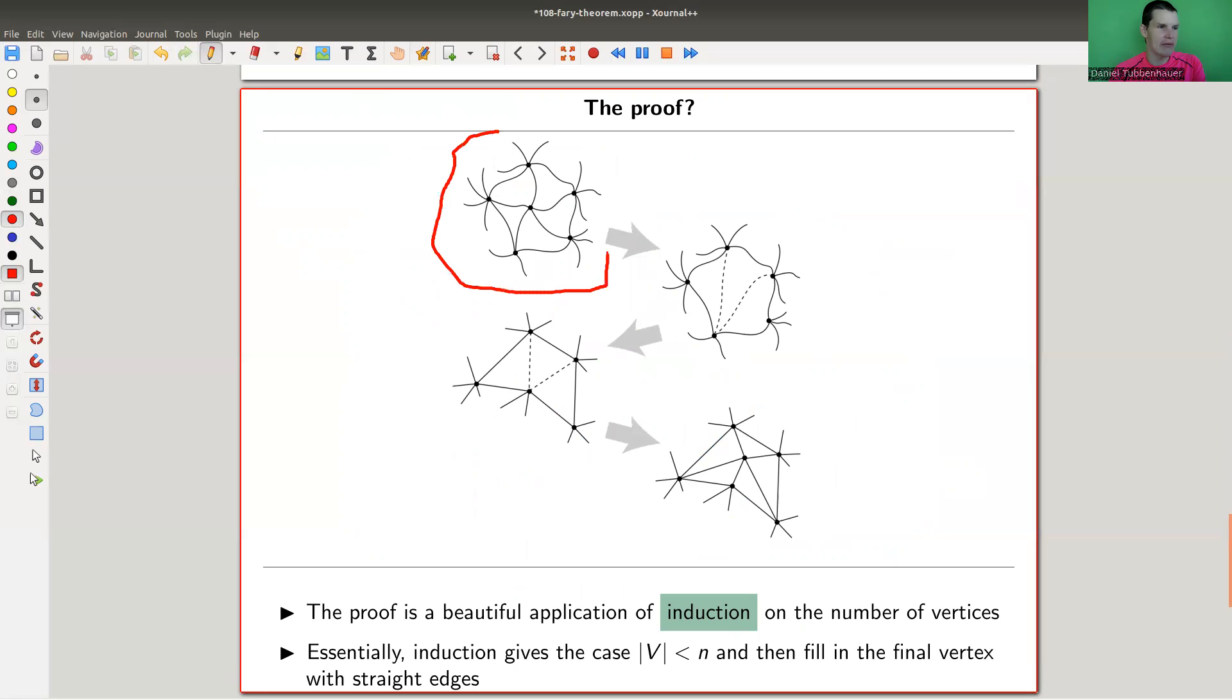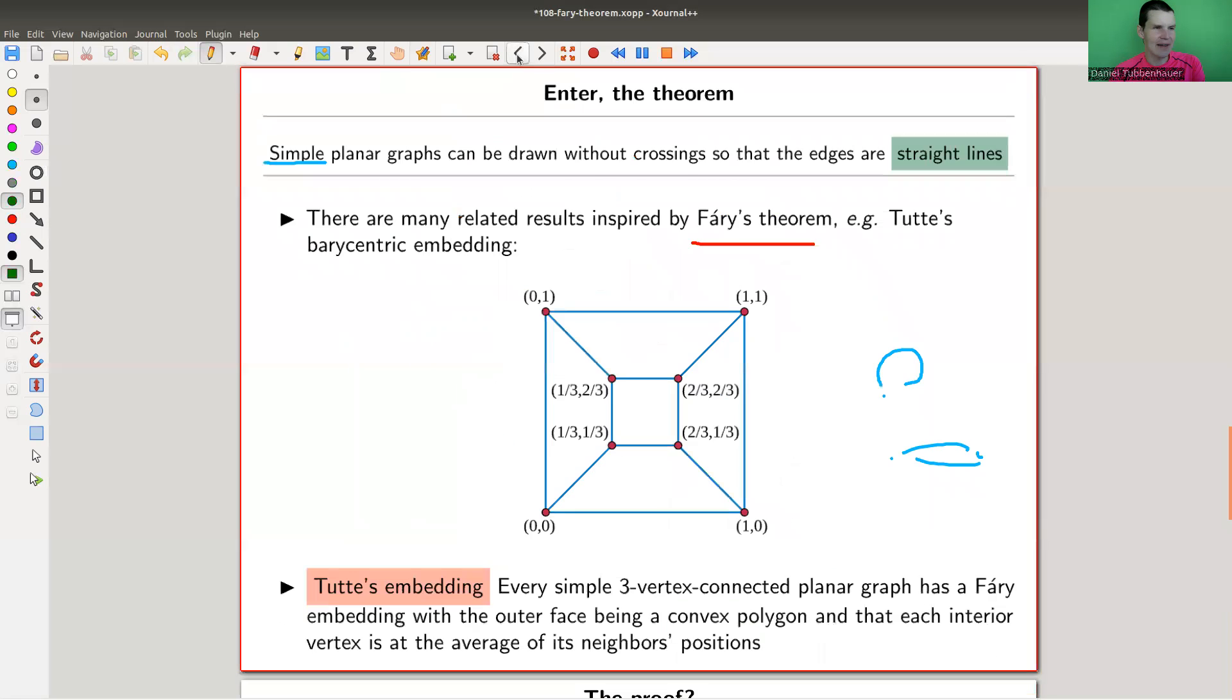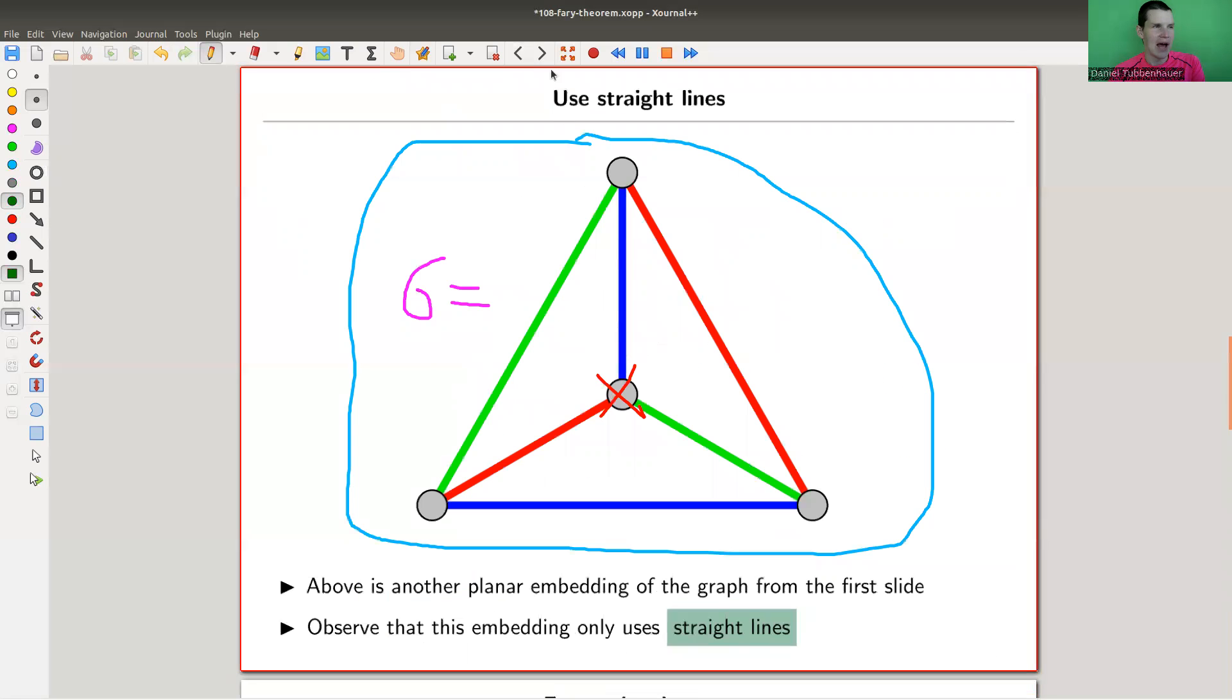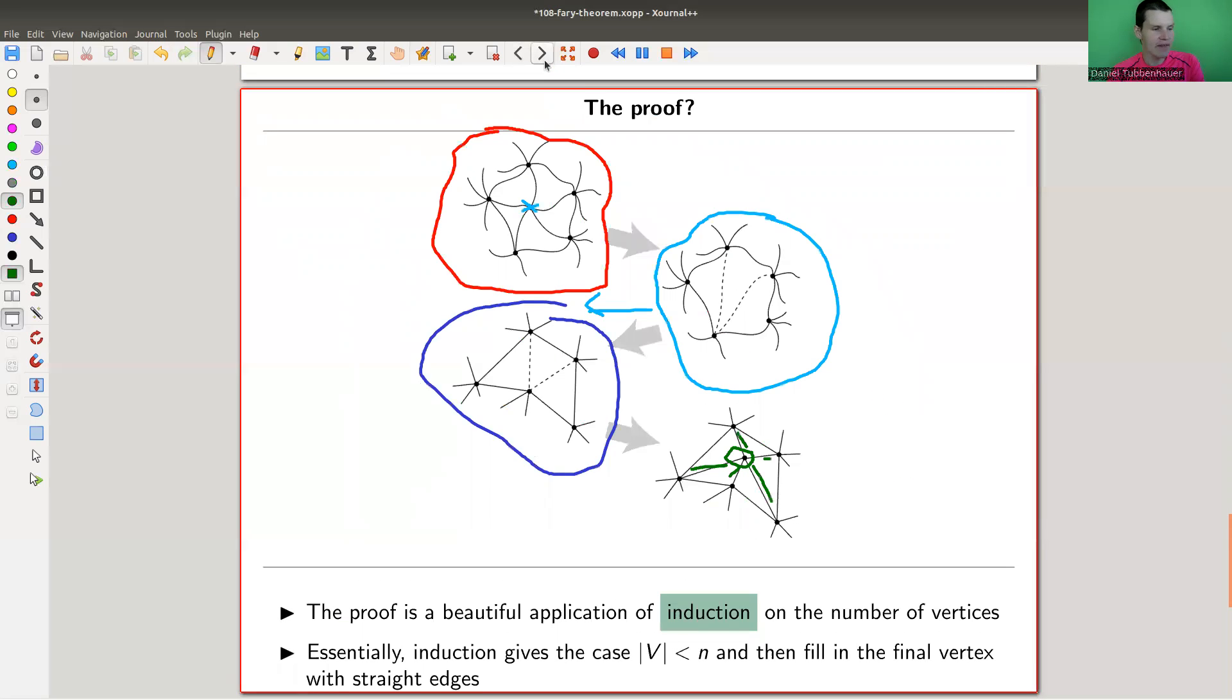So you assume that you have some planar graph, here you go, it's some planar nonsense, you remove, well, you can assume that it's triangulated. But essentially, what you do is you remove one of the vertices, you get a smaller planar graph, you apply induction, so this is the induction step, and it gets you a straight line planar graph. And then you can just add it in in the middle, again, and just draw straight lines. And that's a really cool argument, actually, and it's exactly how it works for this graph.